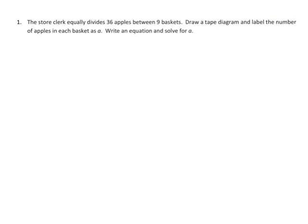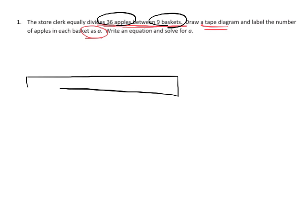So let's get started. We have a store clerk, and the store clerk equally divides 36 apples between 9 baskets. Draw a tape diagram and label the number of apples as A. All right, so first thing we know is we've got 36 apples, and they're being divided amongst 9 baskets. So our tape diagram, doesn't really matter how long the tape diagram is, but I'm going to divide it up into 9 equal sections, and that's our 9 baskets. And the total is 36 apples.